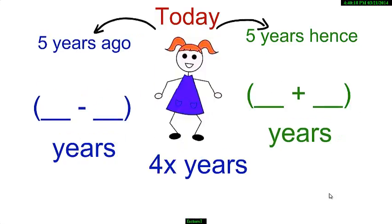Now, my second friend says, today I am 4x years old. How old was I 5 years ago? How old will I be 5 years from now? So, 5 years ago she was 4x minus 5 years and 5 years from now she will be 4x plus 5 years.